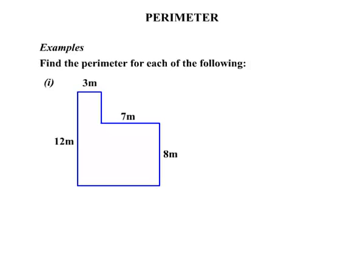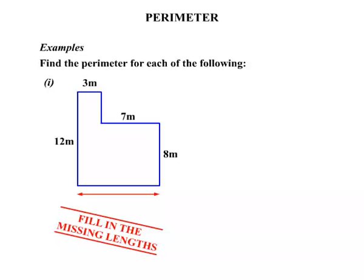Our first diagram there. It's not a regular shape. You can see that it looks like an L shape there. Now as before we need to fill in the missing lengths. Now that length there, down the bottom there. Have a good look around the diagram. Can you see what that would be?